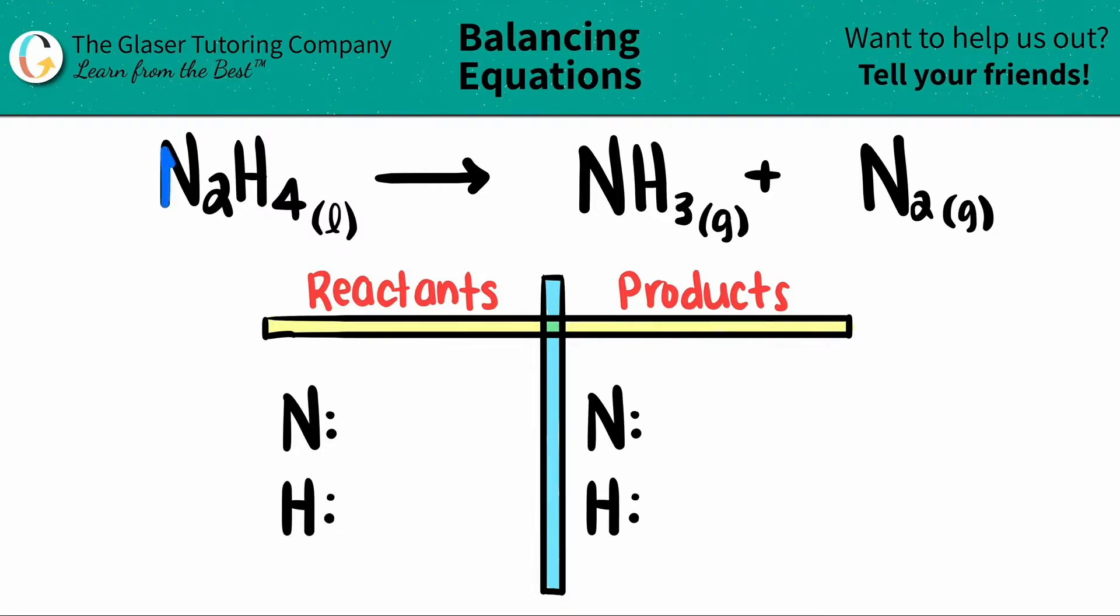Let's start with the left side. For the nitrogen, I see that I have two here. So that means that I have two nitrogens. And for the hydrogen, there's a four next door. So that means that I have four hydrogens.